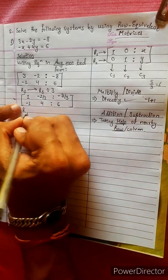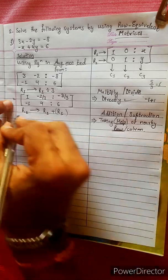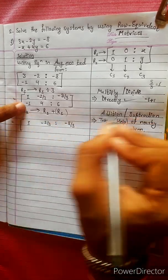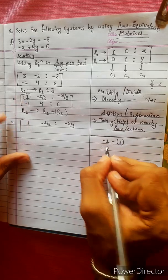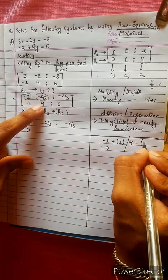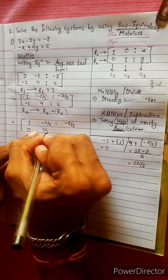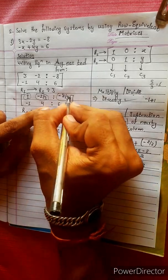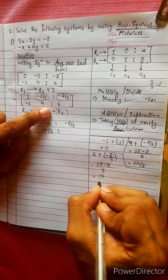R2. Now: 1, 2 — minus 2 by 3, minus 8 by 3. Minus 1 into minus 1. R2: minus 1 plus R1 gives 0; 4 plus R1 gives, using LCM of 3, equals 10 by 3. Then 6 plus R1: 6 plus minus 8 by 3, LCM gives 10 by 3.